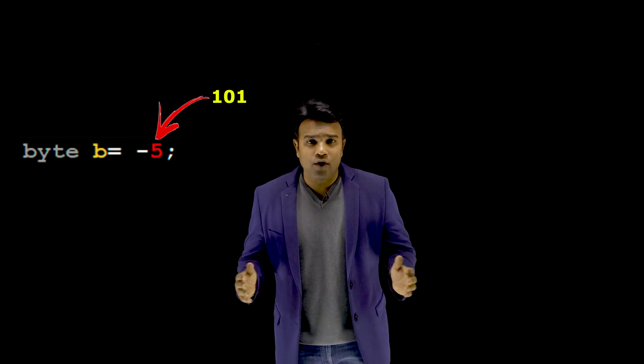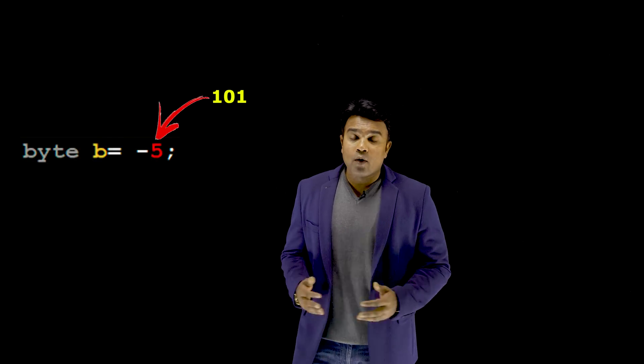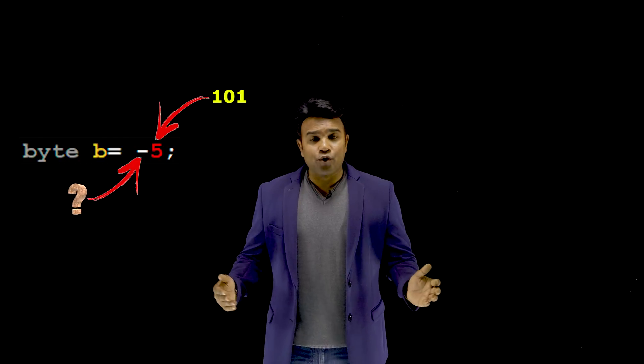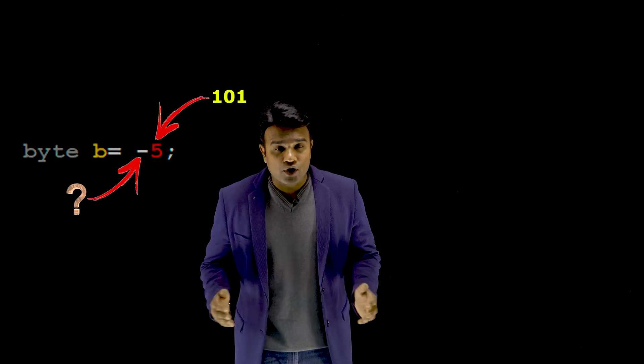The real challenge while storing minus 5 in the memory device is that while 5 can be stored in binary form as 101, how do we really store the minus symbol? To overcome this challenge, most programming languages store a negative number in the 2's complement binary representation. Let me explain.